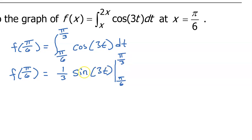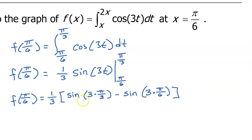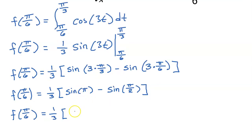This reminds me to find the value at pi over 3 minus the value at pi over 6. But 3 times pi over 3 is just pi, and 3 times pi over 6 is pi over 2. The sine of pi is 0, and the sine of pi over 2 is 1. So this will be negative one-third.